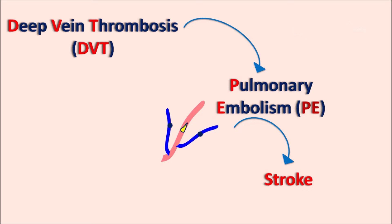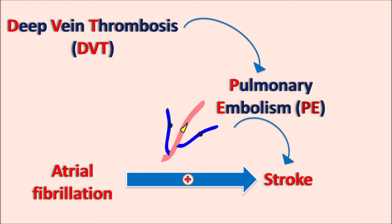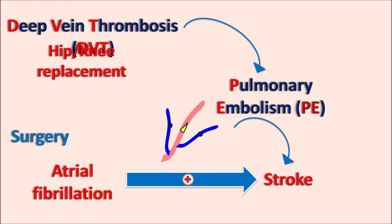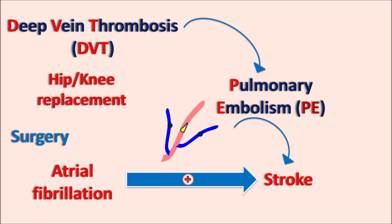Cardiovascular disorders like atrial fibrillation can also increase the risk of stroke whenever clots are formed. After surgery, there is again a complication of clot formation — for example, in surgeries like hip or knee replacement, post-surgical complications may result in deep vein thrombosis which may lead to embolism if untreated.